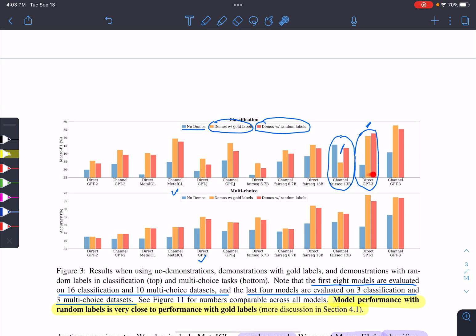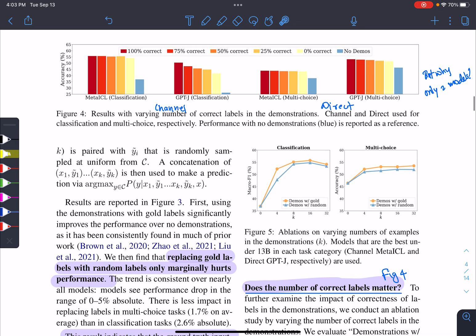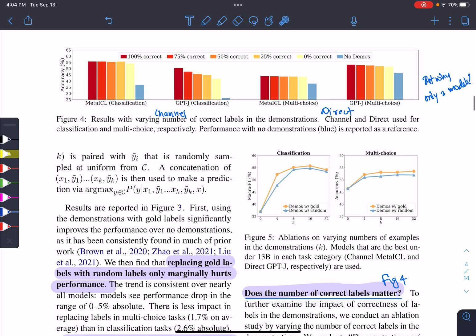For the gold label is the highest. And what we expect is when we have random labels, the performance should decrease significantly. But here it is not the case. Sometimes it also increases, which is interesting to see. From this, they are concluding that model performance with random label is very close to performance with gold labels. And they dig deep down into what happens if we have different percentages of gold labels and random labels. If you see, there is not much difference. Only GPT-J has this difference, but others they don't. So number of gold labels, correct gold labels doesn't make much difference.